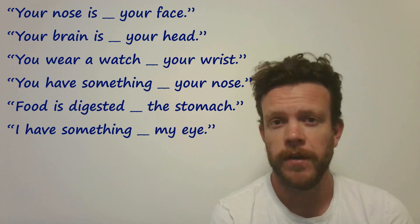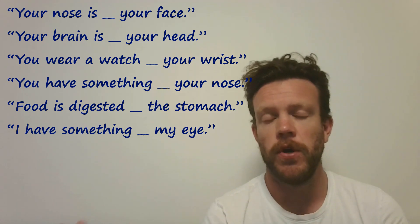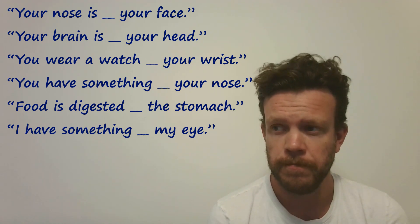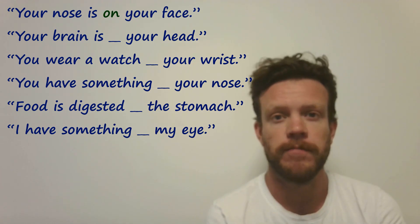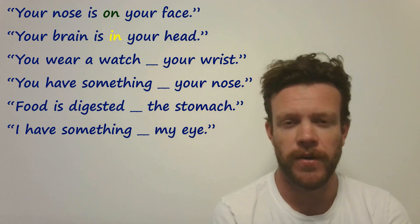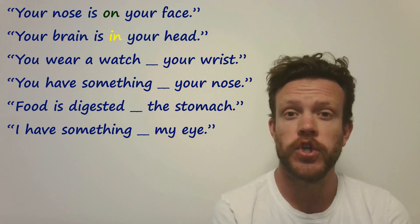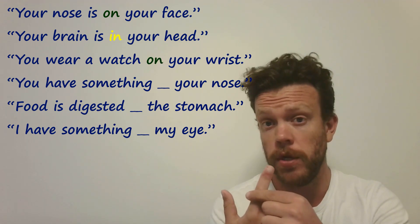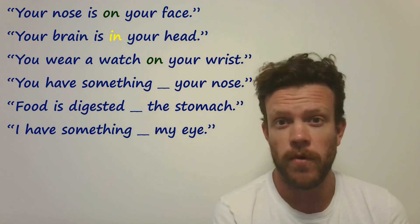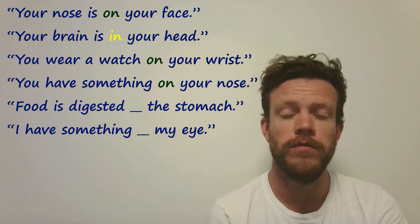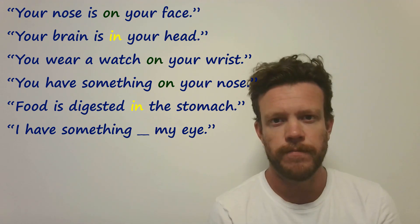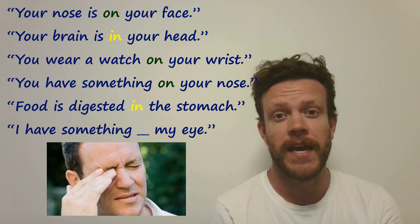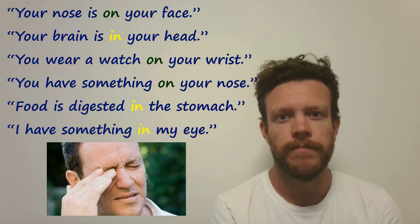Pause the video and try to complete these sentences with 'on' or 'in' to talk about the body. Well done if you said: your nose is on your face, but your brain is in — inside — your head. You wear a watch on your wrist, a ring on your finger. You might say to someone: you have something on your nose. Food is digested in the stomach — inside. And the last one: I have something in my eye — maybe it's not literally inside, but that's what we say.